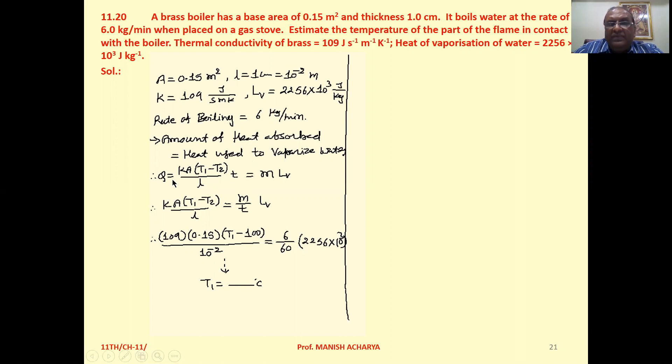Q, that is equal to k × A × (T₁ - T₂) / L × time t. This much heat will be transferred to the water through the bottom or we can say base area of the boiler.